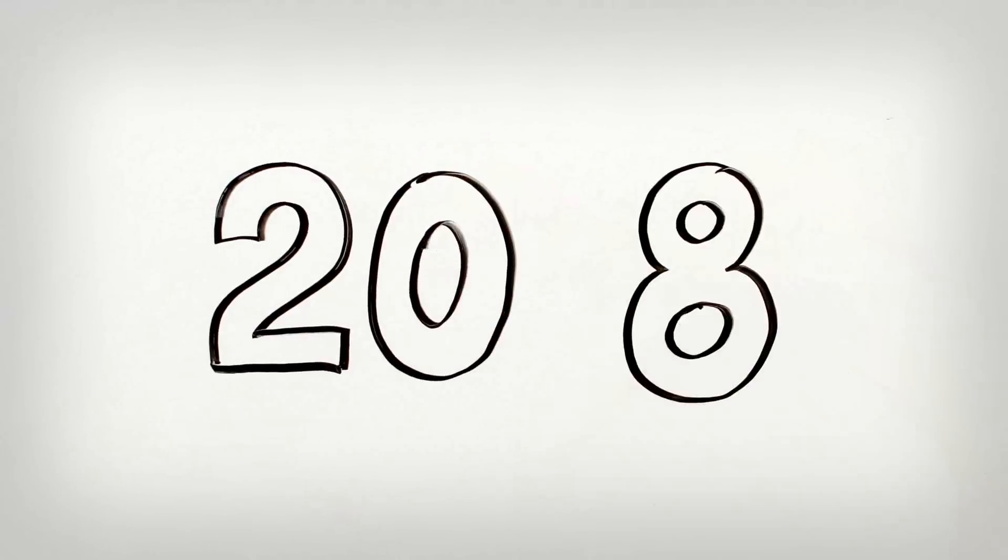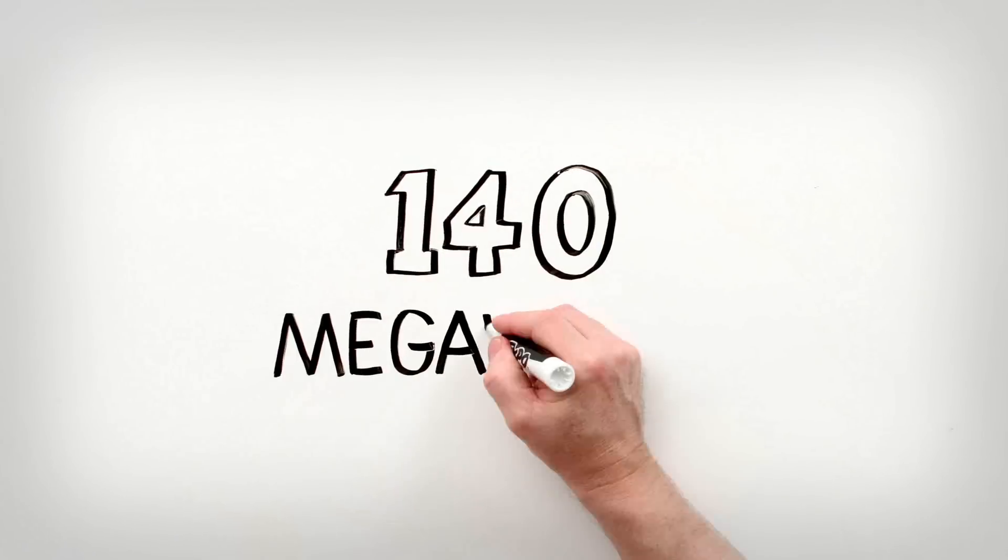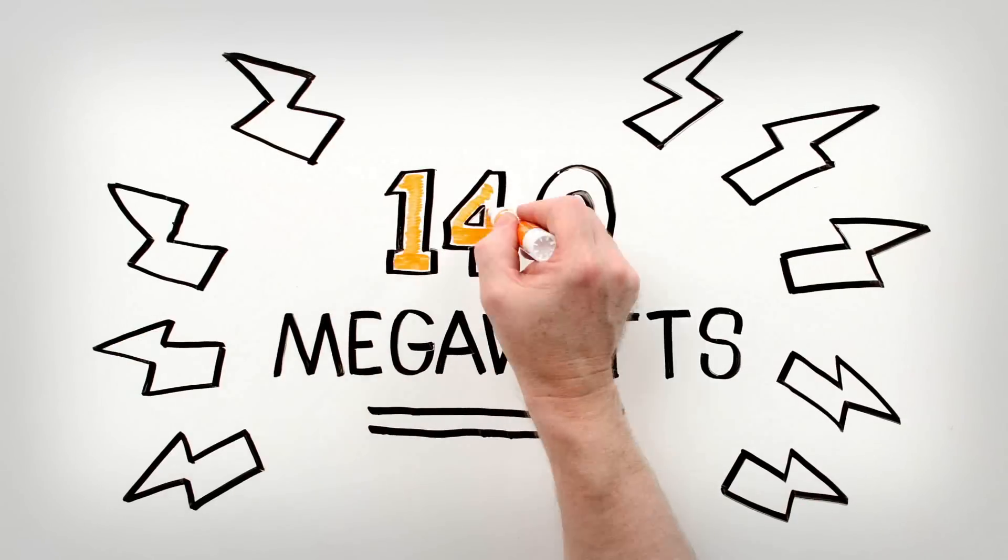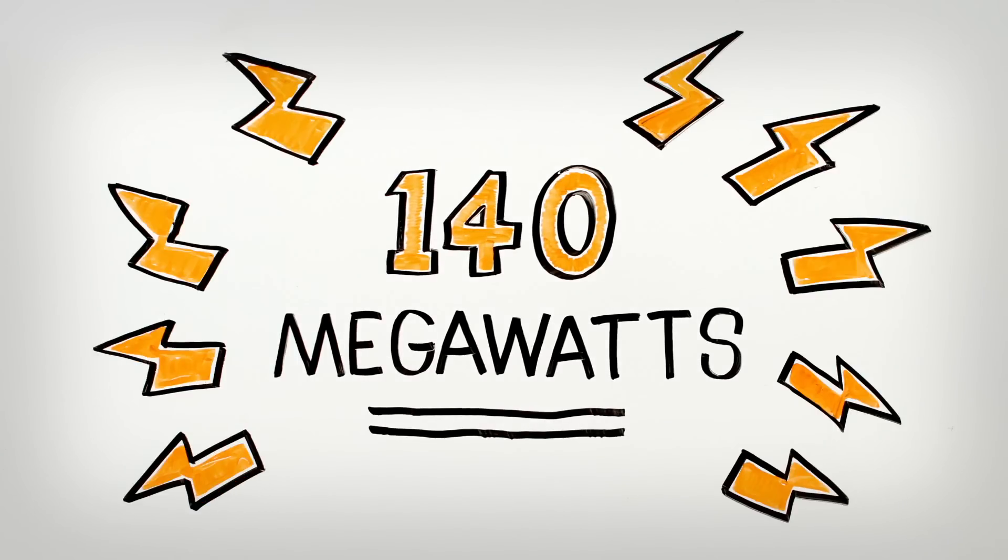Duke Energy owns and operates more than 20 solar sites in eight states. Together, they produce more than 140 megawatts of renewable power. That's enough to serve more than 20,000 homes.